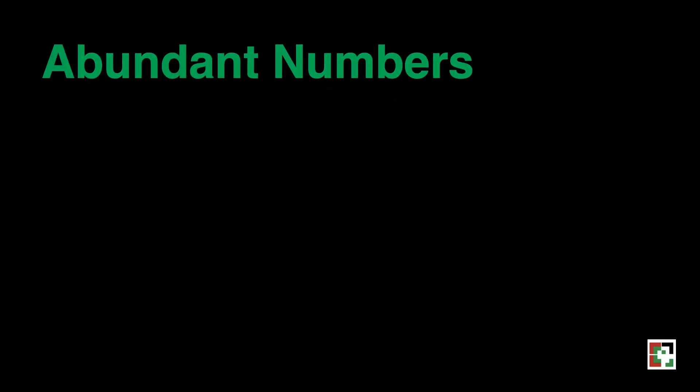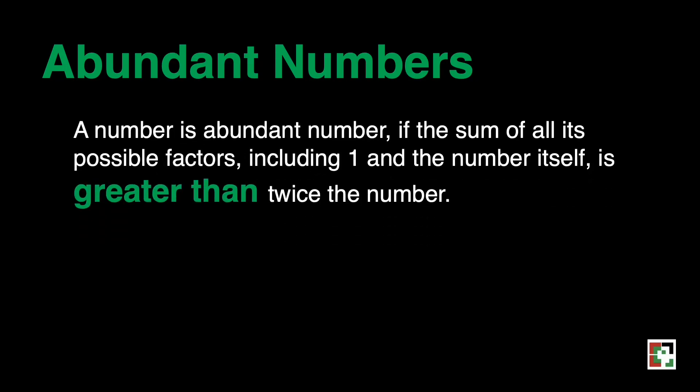How about abundant numbers? I think you get it already. When we say a number is abundant number, if the sum of all its possible factors including 1 and the number itself is greater than twice the number.